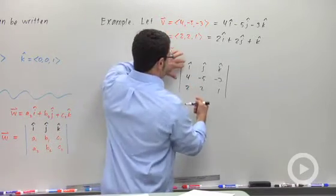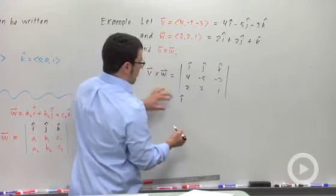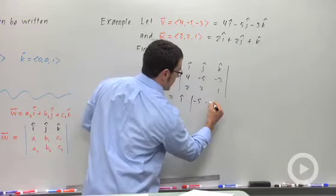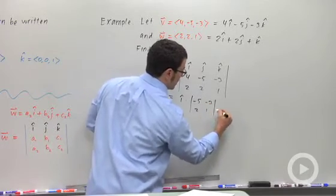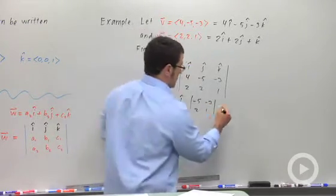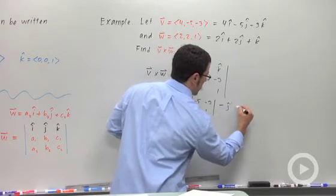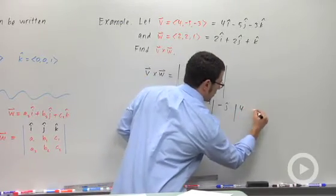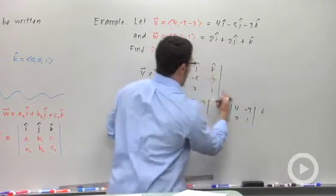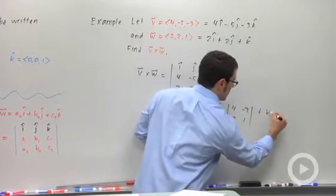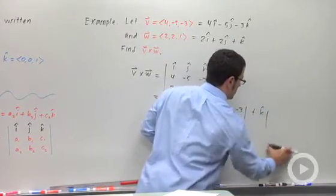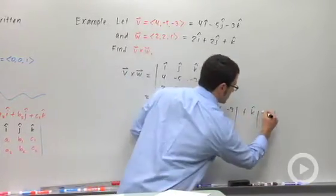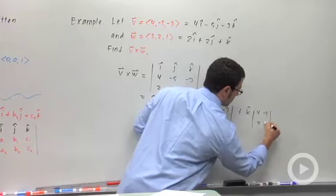So I'll expand across the top row. I have I times this minor, negative 5, negative 3, 2, 1. And then I have to subtract J times its minor, 4, negative 3, 2, 1. And then I add K times its minor, 4, negative 5, 2, 2.